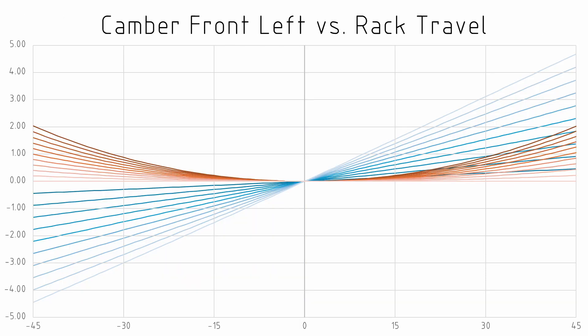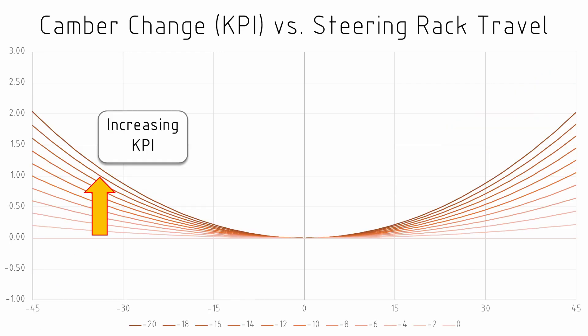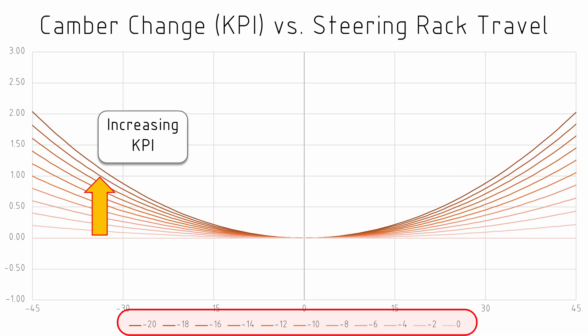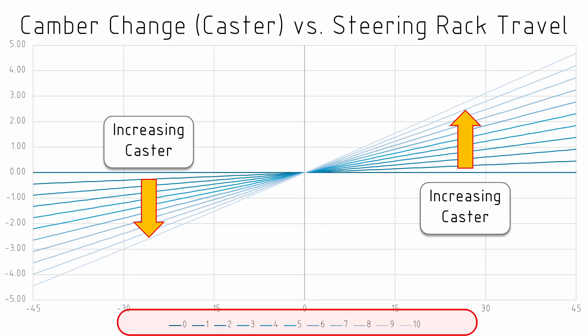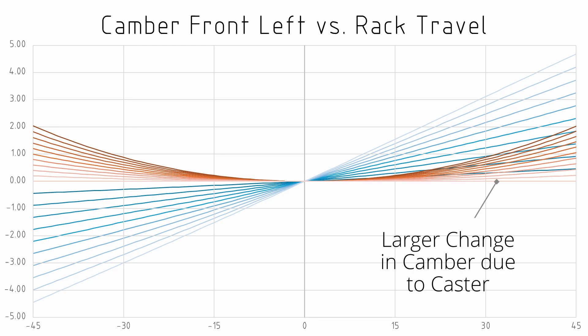If we overlay these graphs and look at the effect of KPI and caster in isolation, we see a couple of things. We've changed KPI from 0 to 20 degrees — which is quite a lot — and caster from 0 to 10 degrees — which for caster is also quite a lot. But even though the KPI has been changed by almost double what the caster has, the camber effects due to KPI are lower than those due to caster angle. So caster will have a more dominant effect on the camber induced by steering.